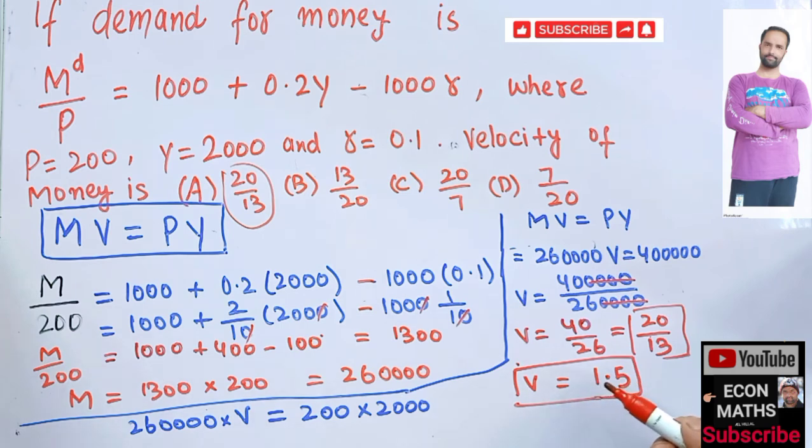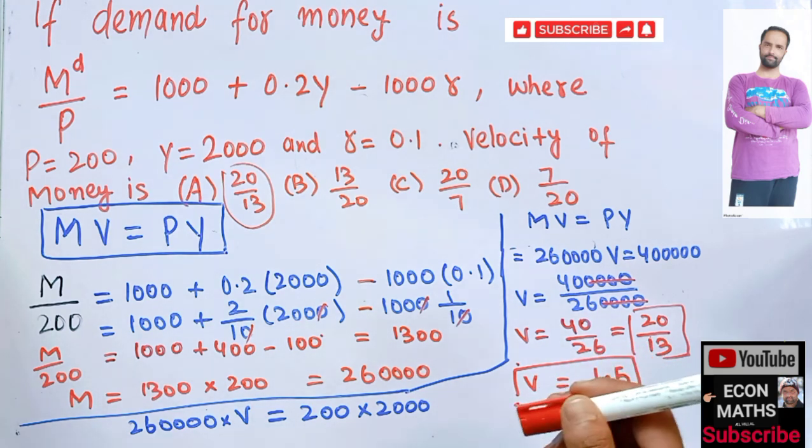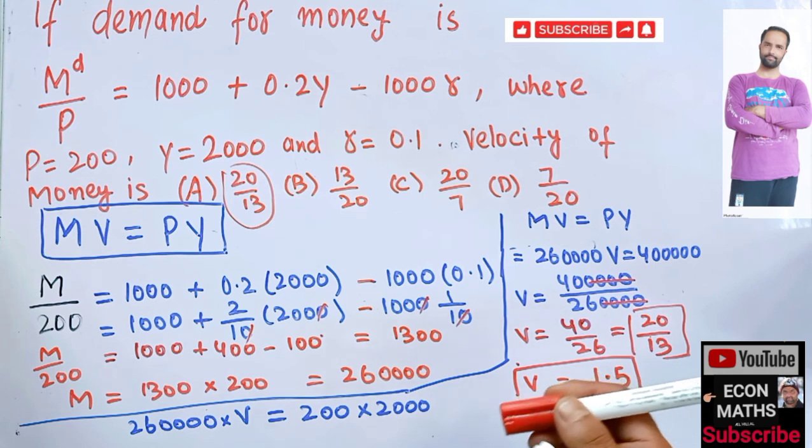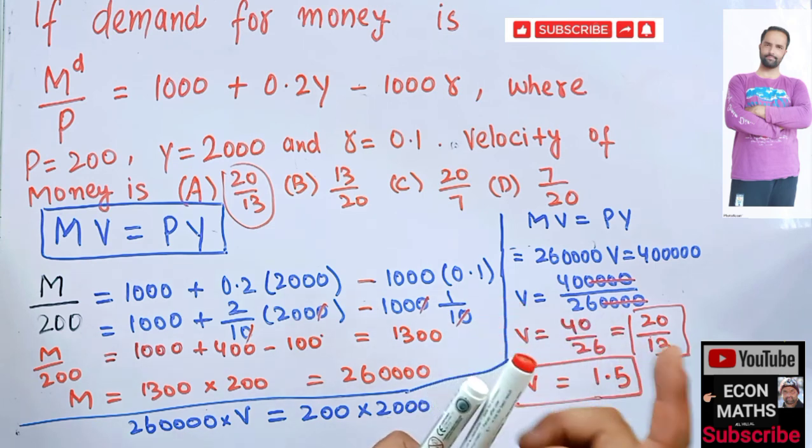That means our velocity of money is 1.5. A velocity of 1.4 means that money supply was spent 1.5 times in purchase of goods and services within a specific time interval. By velocity we mean simply the average number of transactions that a unit of money performed within a specified time interval. I hope I make myself clear. Thank you.